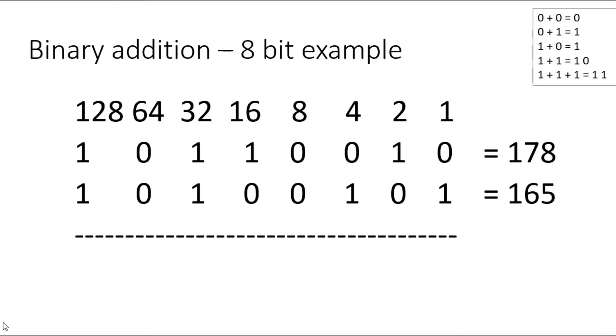So simply add the columns up: zero plus one is one, one plus zero is one, zero plus one is one, zero plus zero is zero, one plus zero is one, one plus one is zero.